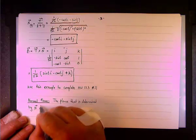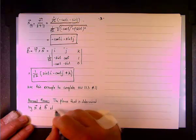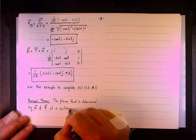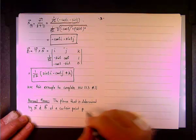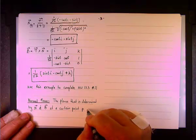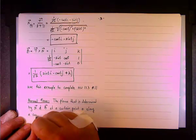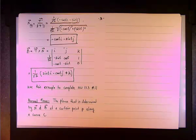by the vectors N and B, the normal and binormal at a certain point, along a curve, along a curve C.